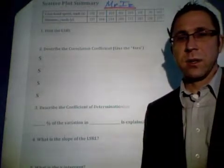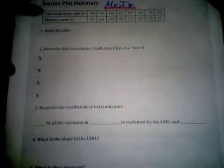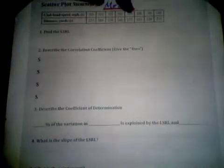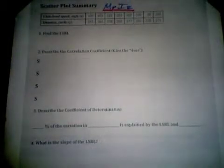So without further ado, here is the lesson. We're starting off with some information from the textbook that's showing the club head speed of a golf club with how far the golf ball actually goes. We've got eight different measurements and their corresponding distances with the golf ball.